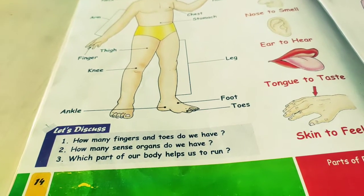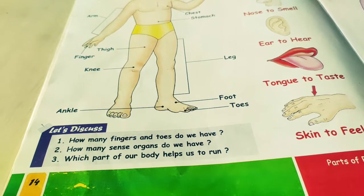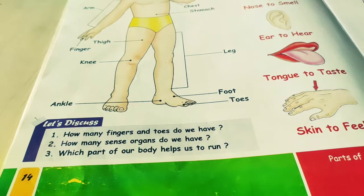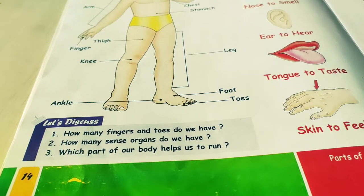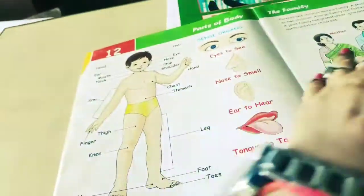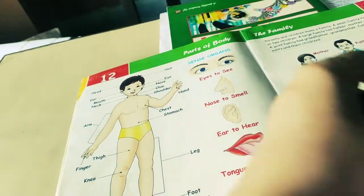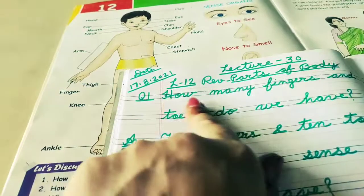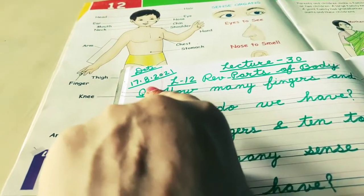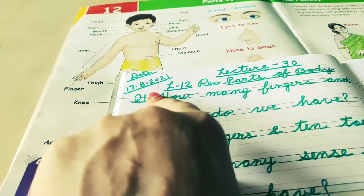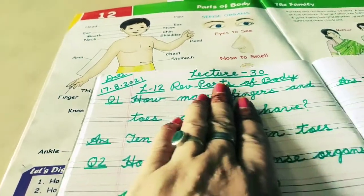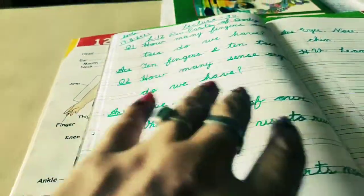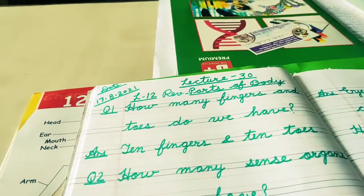Which part of our body helps us to run? Relax. Okay my dear students. You know what is the date today? Today is 17th of August, 8th month, year 2021. Lecture number 30: Revision — Parts of Body Name.